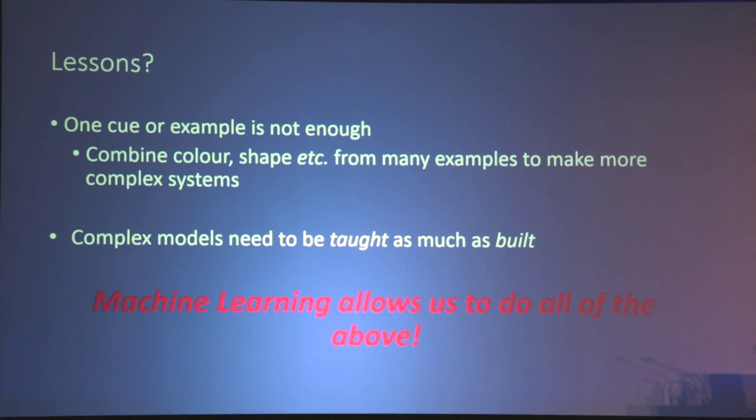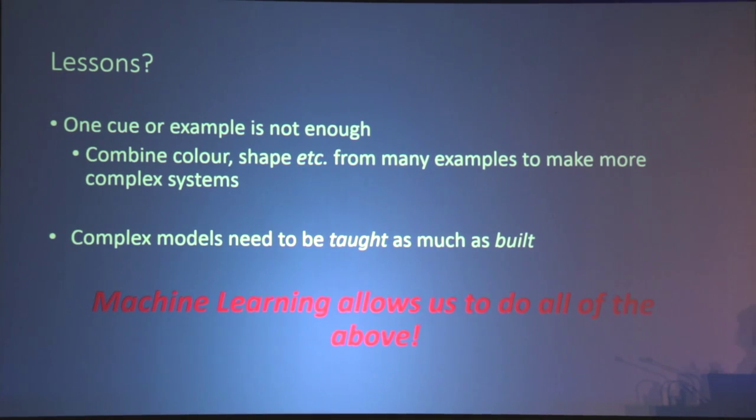The orange is a very simple example, but in practice the kinds of shapes we want to detect — animals, giraffes, 3D objects — are much more complicated. The lessons learned from this simple example are: you often need lots of cues and lots of examples to learn a good system. These complex systems have to be built in a way that they can learn on their own, keep adapting to new data, and perform as well as possible. This is what machine learning allows us to do in computer vision.